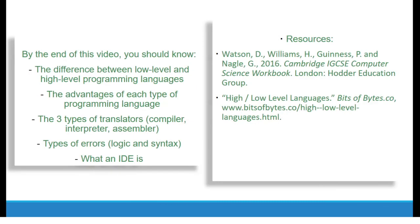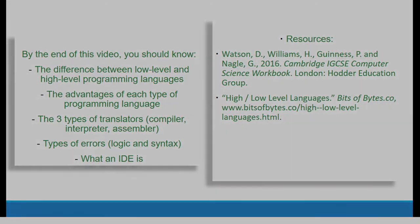By the end of this video, you should know the difference between low-level and high-level programming languages, the advantages of each type, the three types of translators — compiler, interpreter, and assembler — types of errors including logic and syntax errors, and what an IDE is. We are now over halfway done with the syllabus. I hope you found this video helpful and that it has extended your knowledge on CS. I'll see you in Chapter 8, which will be Computer Security and Ethics.